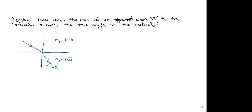This angle here is the angle of refraction. This angle here is the angle of incidence. The angle of refraction I'll call theta 2, and that angle is given to us in the problem — it's 39 degrees — because that's the angle that the scuba diver is apparently seeing the sun at with respect to the vertical. And then this angle up here is the incident angle, I'm calling it theta 1. This is the true angle of the sun with respect to the vertical, and this is what we've got to calculate.